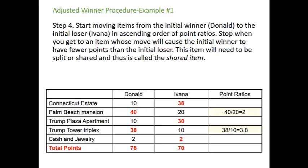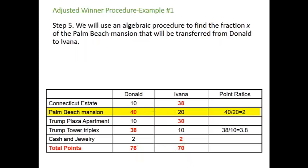Looking at the point ratios of 2 and 3.8, since 2 is the smallest, we focus first on the Palm Beach mansion. If we transferred the entire Palm Beach mansion from Donald to Ivana, that would drop Donald down to 38 points and bump Ivana all the way up to 90 points — so Donald, our initial winner, would suddenly become the loser. Therefore we cannot transfer that entire item. Instead, it's the item that will need to be shared. We'll use an algebraic procedure to find the fraction x of the Palm Beach mansion that will be transferred from Donald to Ivana.